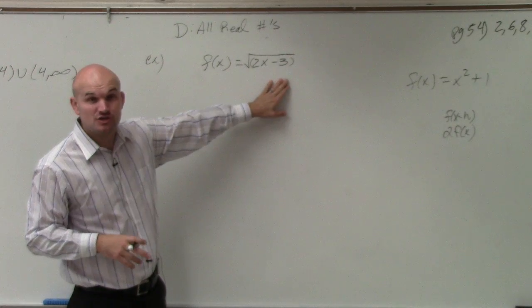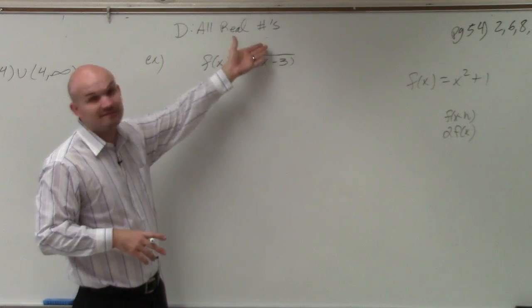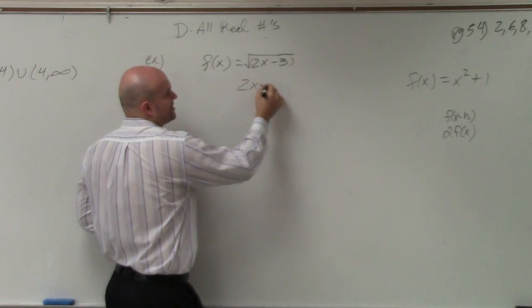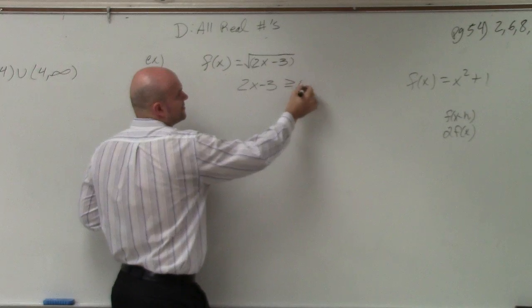So I do have a restriction on its domain. It's not given to us, but it's a restriction that we've talked about. So therefore, my restriction I have 2x minus 3 has to be greater than or equal to 0.